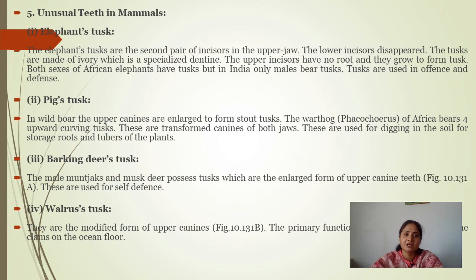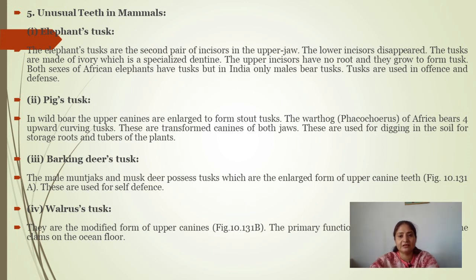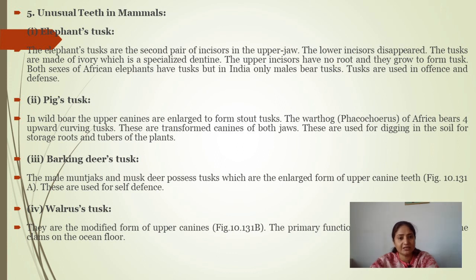Unusual types of teeth in mammals: elephant tusks are the second pair of upper incisors. Lower incisors are completely absent. The tusks are made of ivory, which is specialized dentine. Upper incisors have no root and they grow to form tusks. Both sexes of African elephants have tusks, but in Indian elephants only males bear tusks. Tusks are used in offense and defense. In pigs, tusks are made of canines; in barking deer, tusks are made of upper canines; in walrus, modified upper canines form tusks.